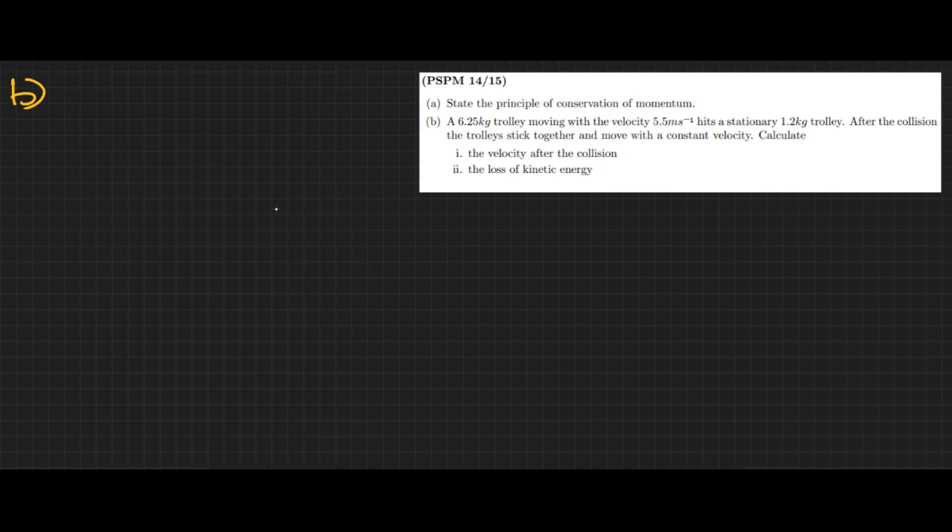First, I would like to draw the scenario. I have a box, 6.25 kilograms in mass, moving at 5.5 meters per second in that direction, and it collides with another trolley, 1.2 kilograms. This is not moving, so it is stationary, zero meters per second.